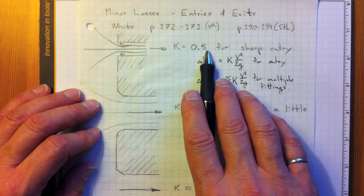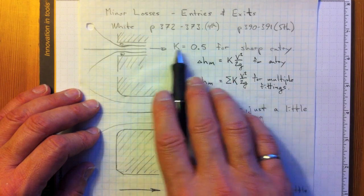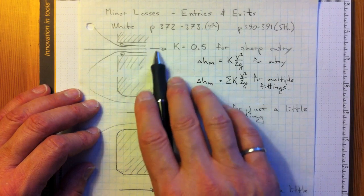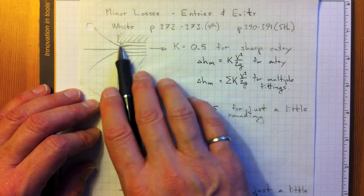Now what is that minor loss coefficient? It's the number of dynamic heads that are lost. So if the flow in here has a kinetic energy of v squared over 2g, then half that much is lost right here in the entrance.